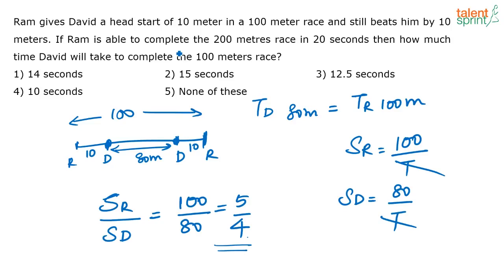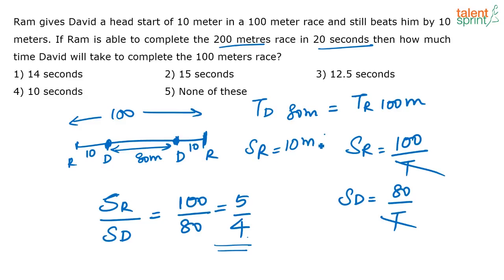Now, if Ram is able to complete 200 meters in 20 seconds, what is the speed of Ram? Speed of Ram is 200 divided by 20, or 10 meters per second. That is the speed of Ram.